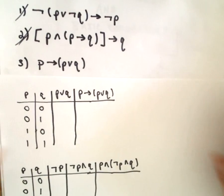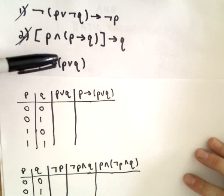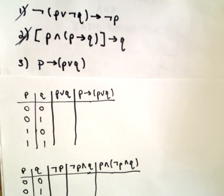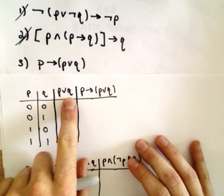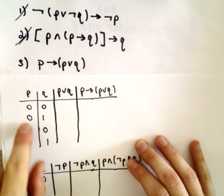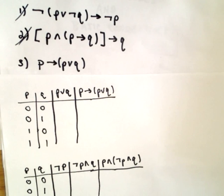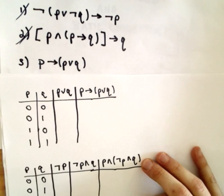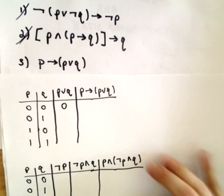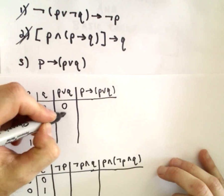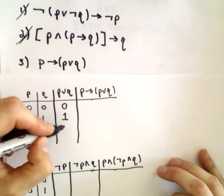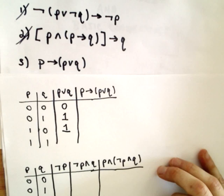Let's do the truth table for P implies (P or Q). I've got my different possible truth values for the statement P or Q. Recall that P or Q is true if either one or both of the statements are true. In the first row they're both false so P or Q will be false. In the second row Q is true so the or statement will be true. In the third row P is true so the or statement will be true, and in the fourth row they're both true.